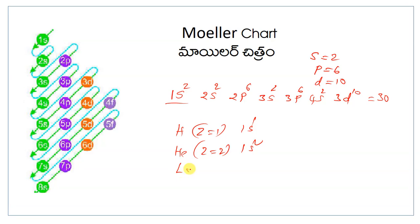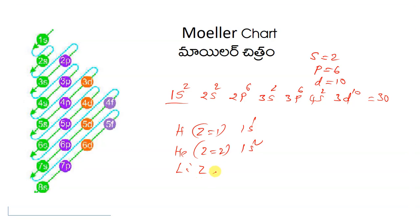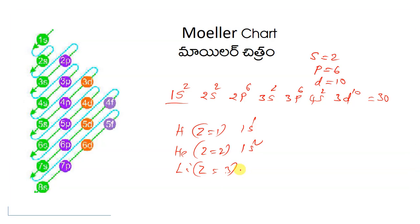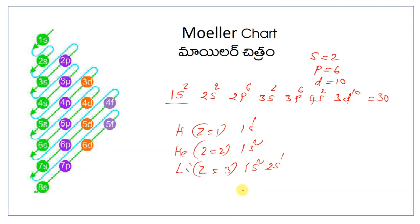Next, suppose lithium Li, Z is equal to 3. That means now 1s plus 2. You must write 1s2. Next, 2s2. 2s2 plus 2 is 4. No, no need. Only 1. So you can write only 2s1. Next, 1s2, 2s2, like that.